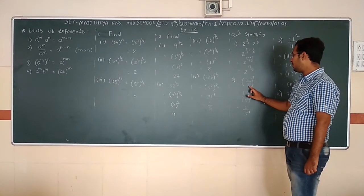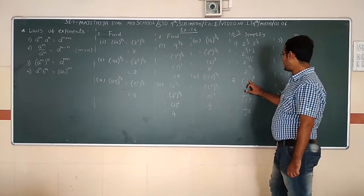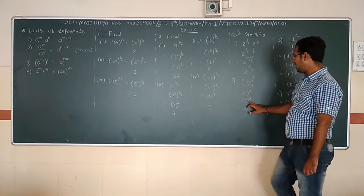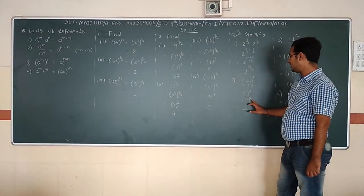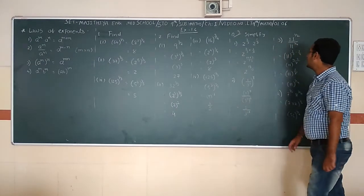Part (ii): (1/3)³ × 3^7. Separate it: 1^7 over 3³, then 3^7. 1^7 = 1. For the base 3: 3^(7-3) = 3^4.